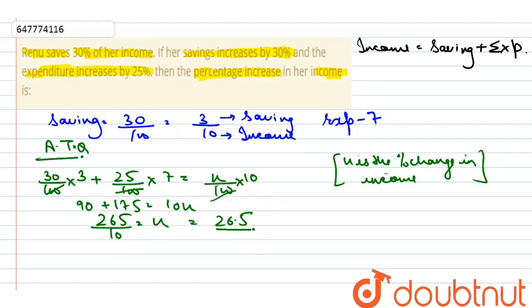Hence, as this value is positive, we can say that the percentage increase, the percentage change is increasing. So we can say that the percentage increase in the income is 26.5% and this is your answer.